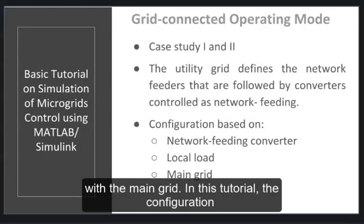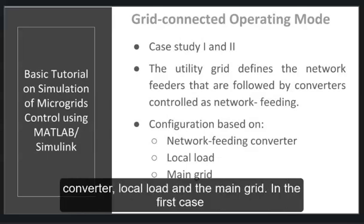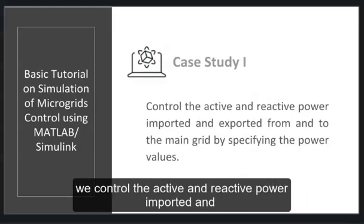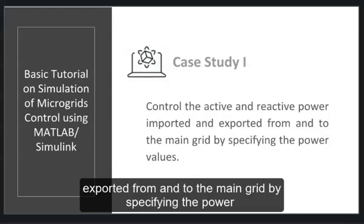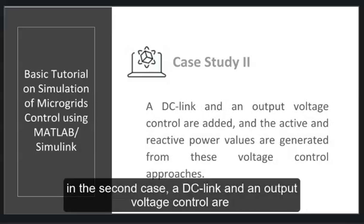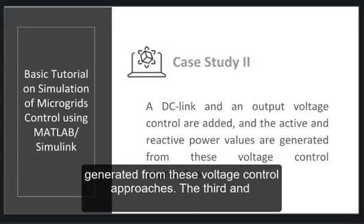In this tutorial, the configuration of these two case studies is based on network feeding, local load, and the main grid. In the first case, we control the active and reactive power imported and exported from and to the main grid by specifying the power values into the converter control system. In the second case, a DC link and an output voltage control are added, and the active and reactive power values are generated from these voltage control approaches.